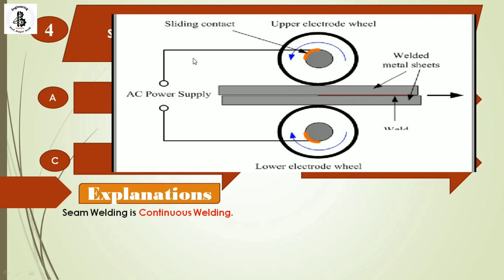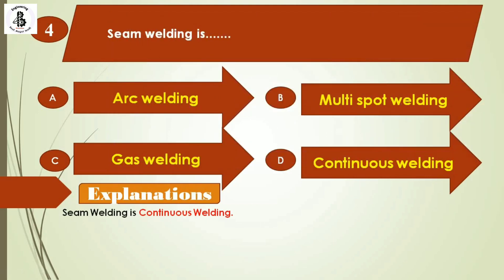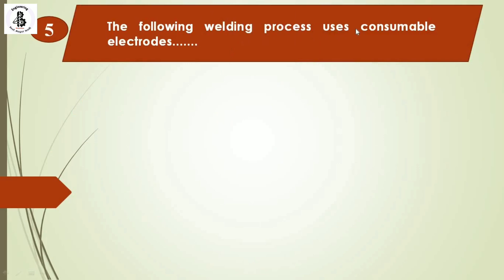Both electrode wheels are connected to an AC power supply and are made of copper, which is a conductive material. Sheet metal is placed between the two electrodes; as AC current flows, resistance generates heat, then pressure is applied to make the joint. The plates pass through the roller electrodes continuously, making continuous spots, so seam welding is a continuous welding process. The right answer is option D.